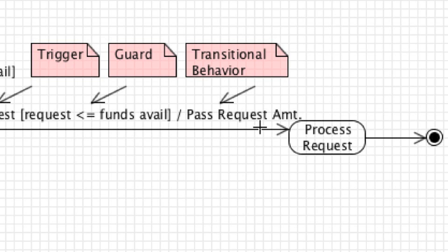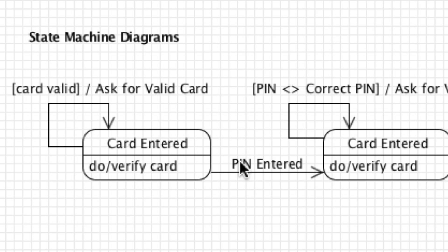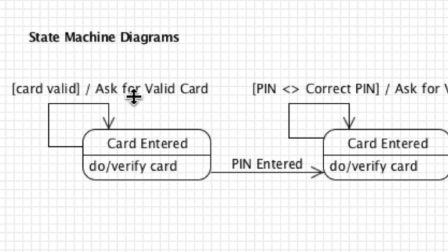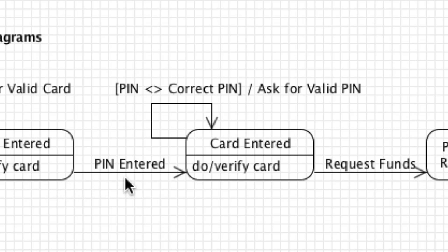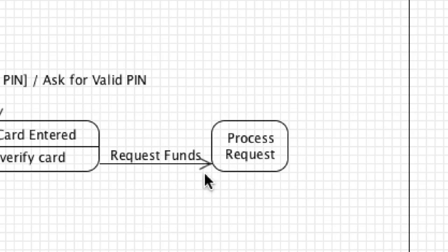In the ATM example, we pass the requested amount the user is asking for, which is then processed in the current state before reaching the final state after the request is processed. If requested funds are less than or equal to funds available it moves to process the request, otherwise it asks for a different amount. If the PIN was entered and the card was verified, we verify the card and PIN and proceed to request funds and process the request.